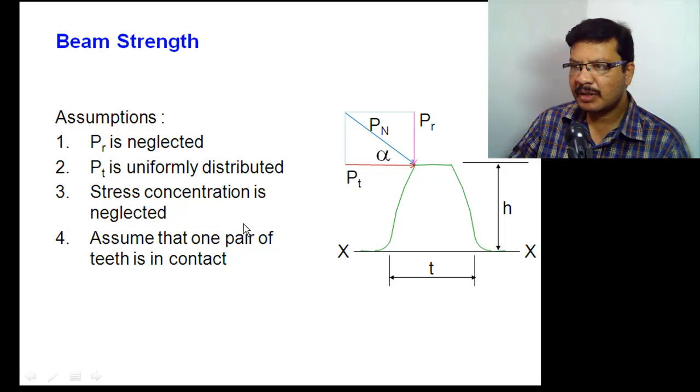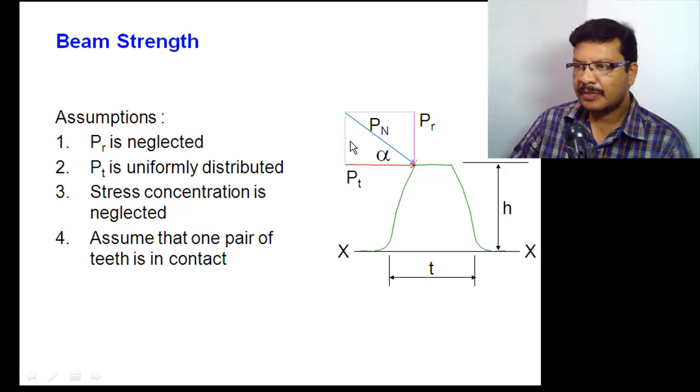I will explain about beam strength of a gear tooth. So this is the gear tooth. The gear tooth forces acting are tangential component Pt and radial component Pr. So the resultant component will act along the common normal. The angle made by the common normal is called as pressure angle. This is the pressure angle alpha.